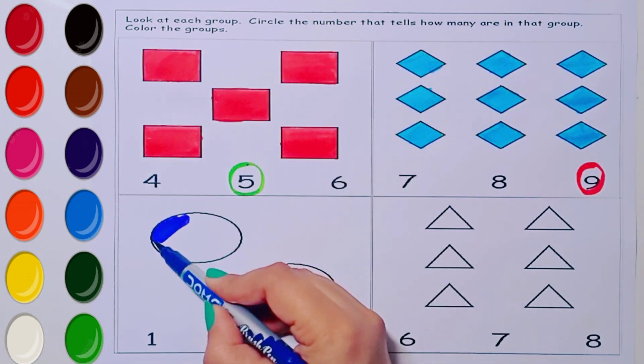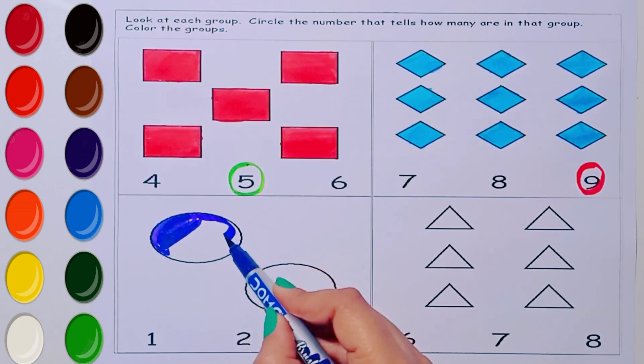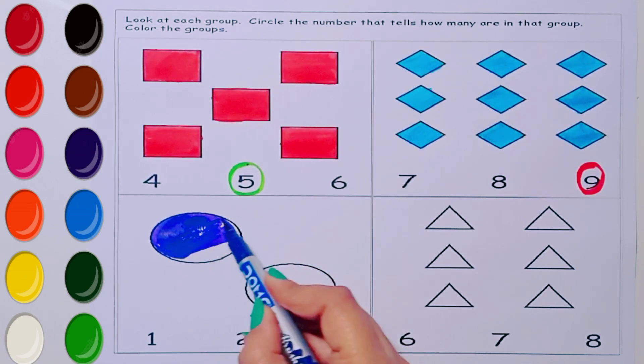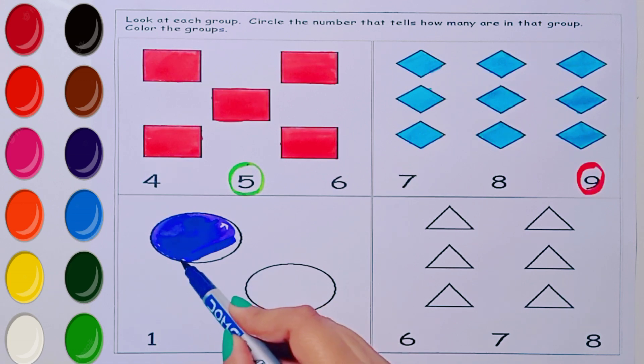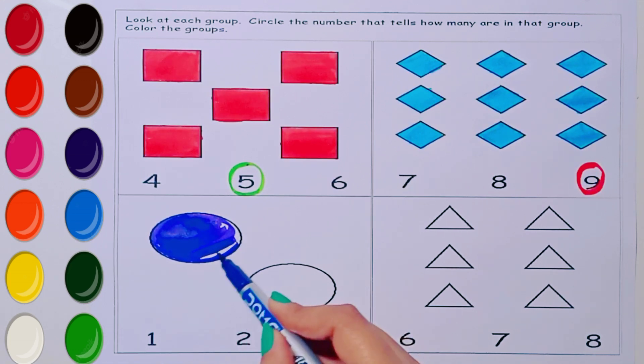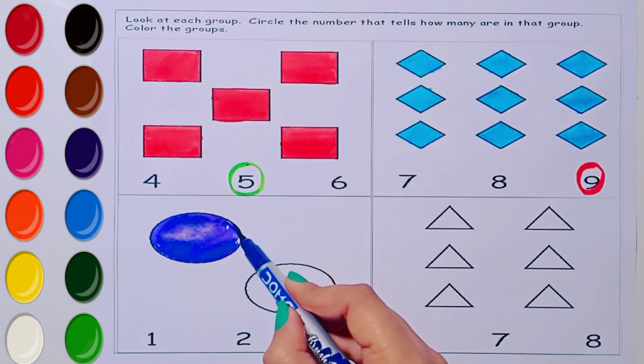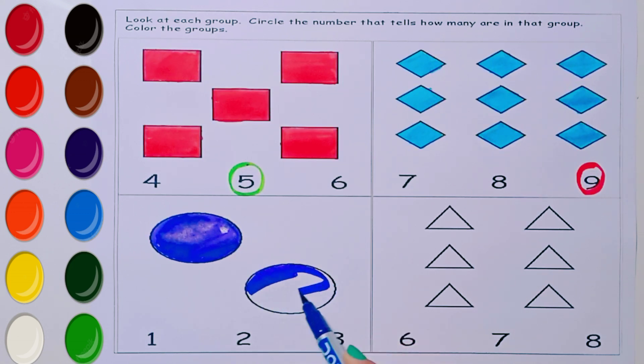Blue color. Which shape is this in which we are coloring? It is circle. Which shape is this? Circle.